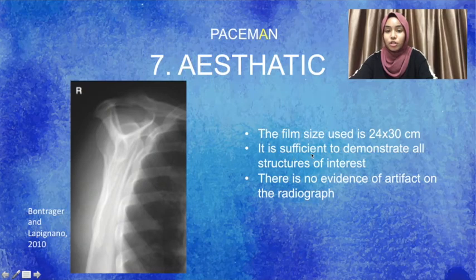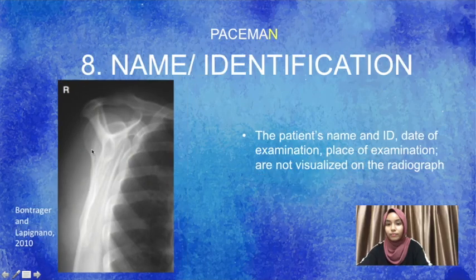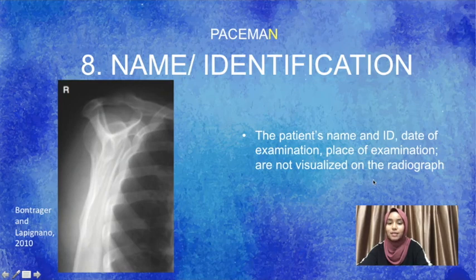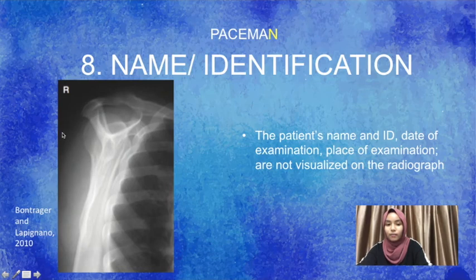Moving next is the aesthetic value. The film size used is 24 by 30 centimeters, which is sufficient to demonstrate all structures of interest, and there is no evidence of artifact on the radiograph. For name and identification, the patient's name, ID, date of examination, and place of examination are not visualized on the radiograph — they could be placed on the right superior border or right lateral border without superimposing any region of interest.